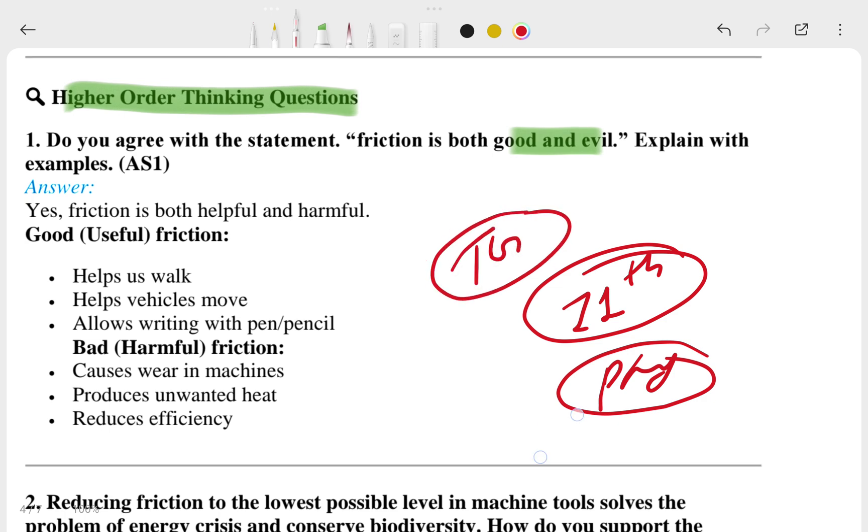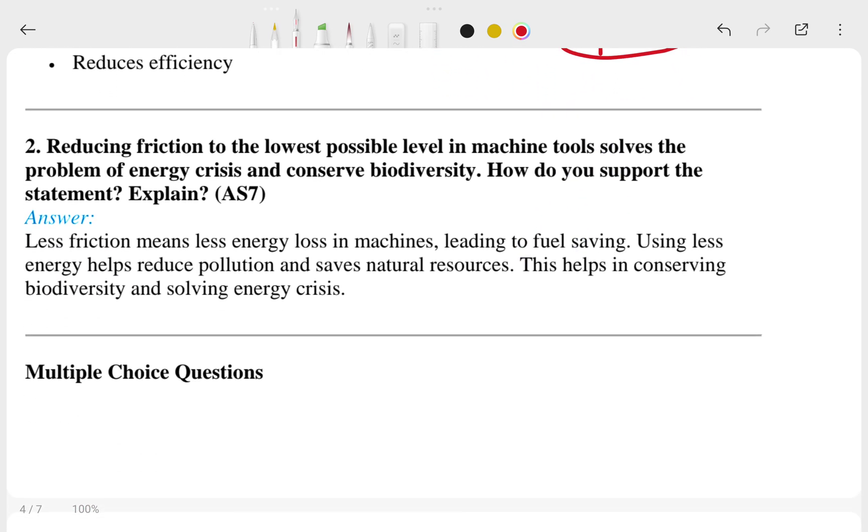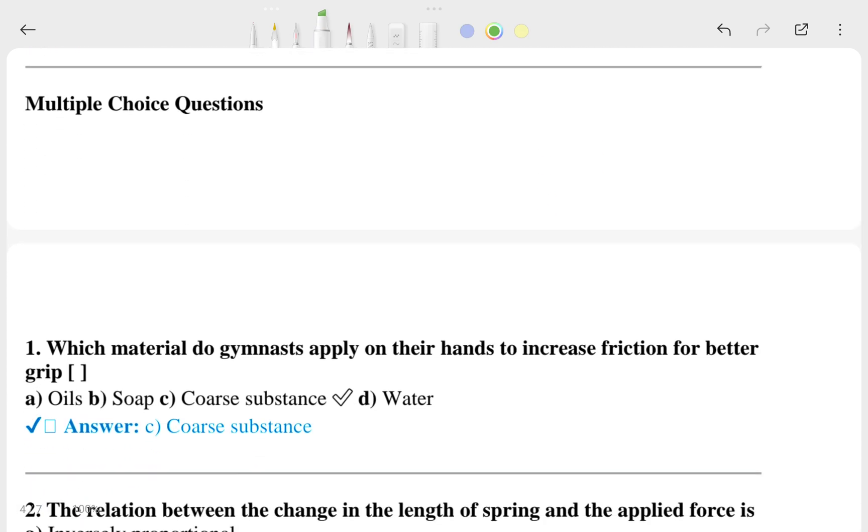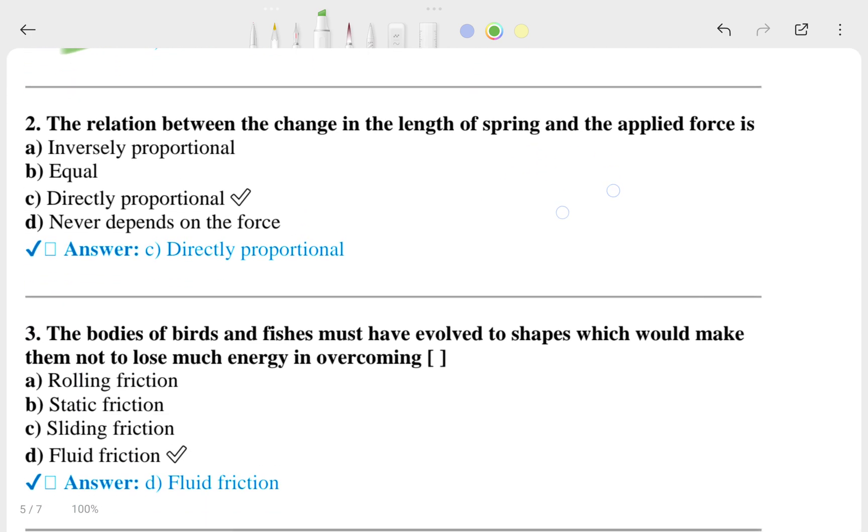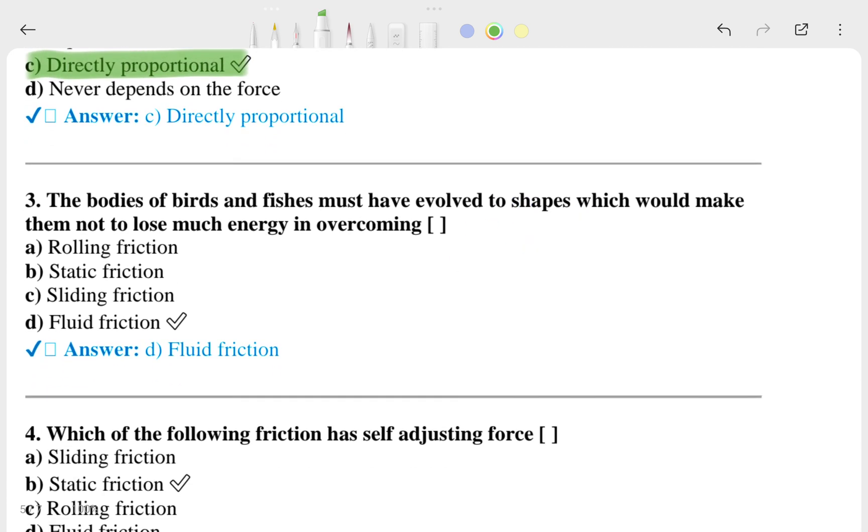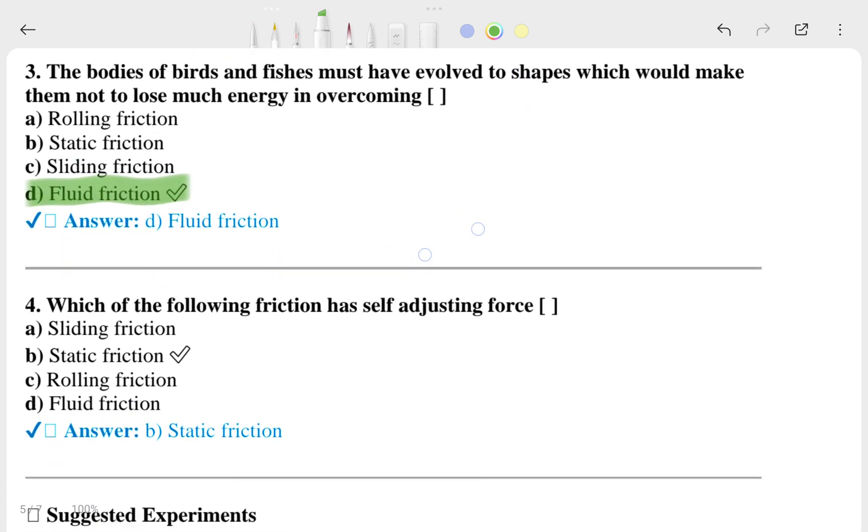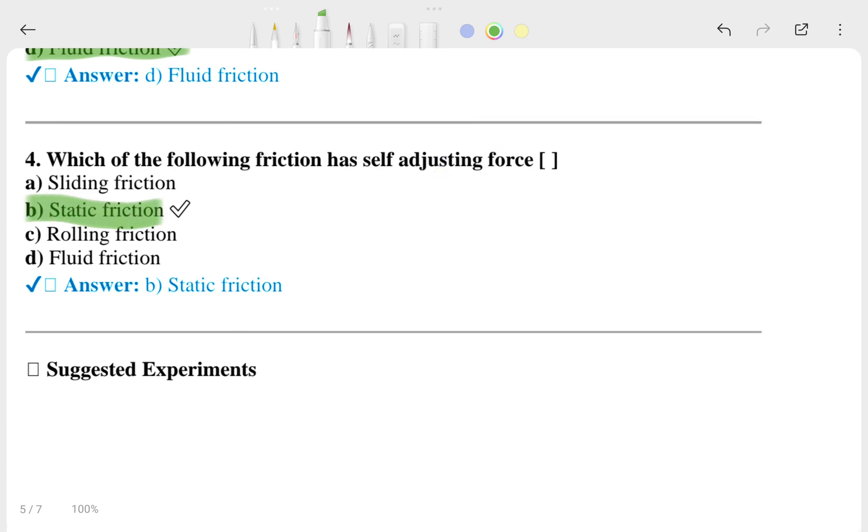Reducing friction to the lowest possible level in machines and tools—this is the second one. You can read about that. After that, I will move to the multiple choice questions. These are the multiple choice questions. The particular answers you can look at: in this one, this is correct; in the third one, option D is correct; in the fourth one, option E is correct.